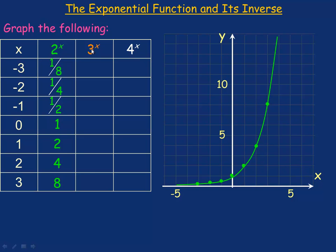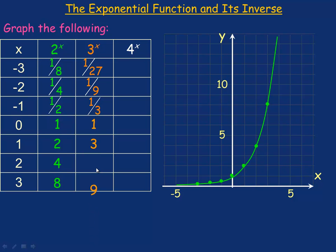For y equals 3 to the x, we first evaluate 3 raised to the power of negative 3 — that's 1 over 3 cubed, or 1 over 27. Then 3 to the negative 2 would be 1 over 9. 3 to the negative 1 is 1/3. 3 to the 0 is 1. 3 to the 1 is 3, 3 squared is 9, and 3 to the power of 3 is 27. We plot those points, and since 3, 27 is off the top of the graph, we draw a smooth curve — that's what y equals 3 to the x looks like.